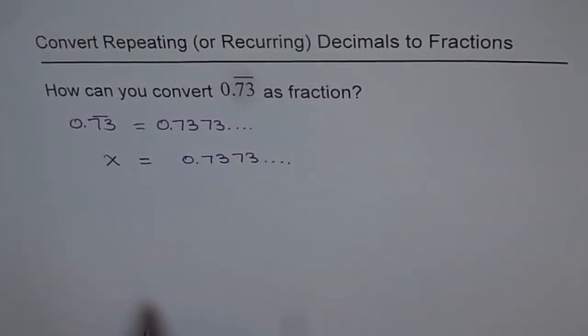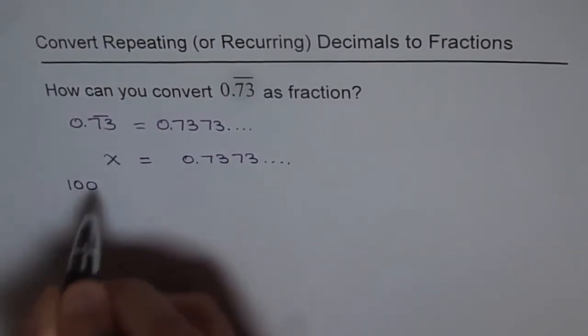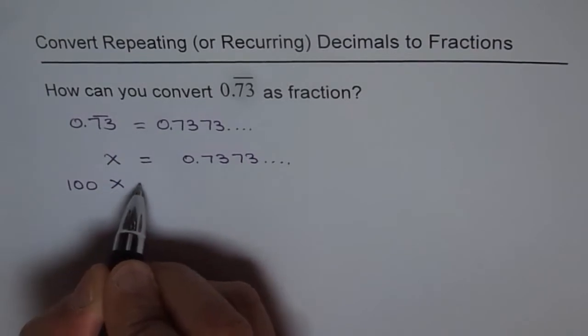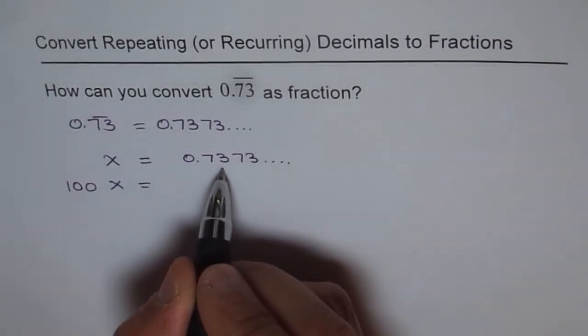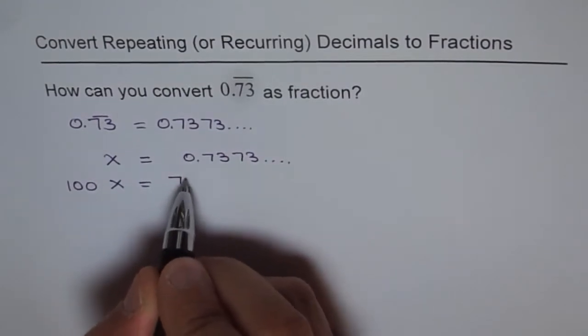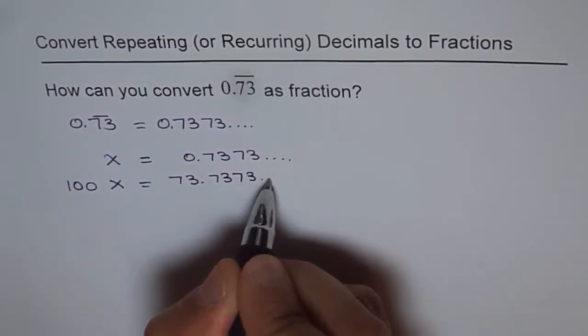So the strategy is times it by 100. Let's multiply by 100 and see what we get. We get 100x here, and when I times by 100 the decimal moves two places, so I get 73.7373... and so on.